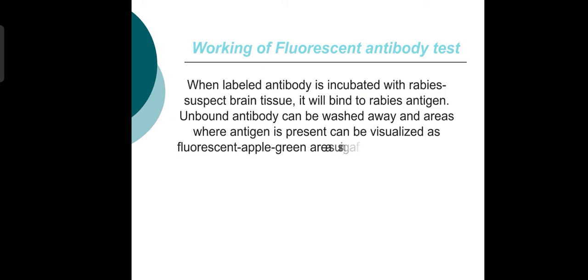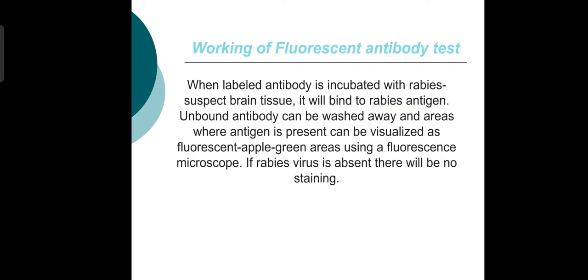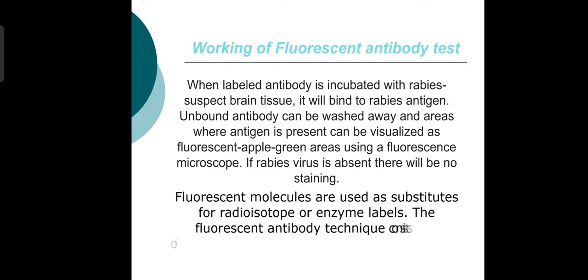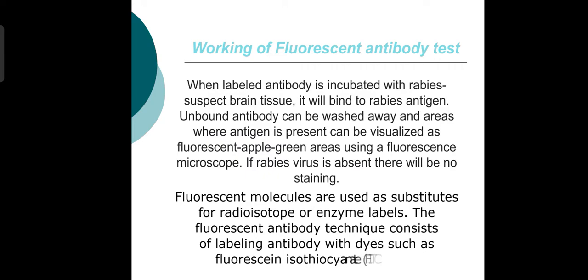The working of fluorescent antibody: when a labeled antibody is incubated with rabies-suspected brain tissue, it will bind to the rabies antigen. Unbound antibody can be washed away, and areas where antigen is present can be visualized as a frozen apple-green area using a fluorescence microscope. If rabies virus is absent, there will be no staining.